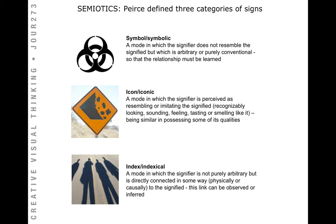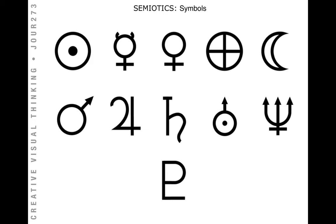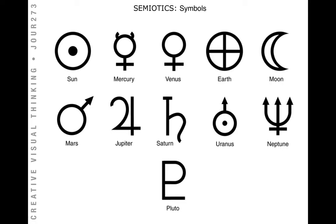An icon is where the signifier resembles or imitates the signified — it will look like what the image represents. An index is where the signifier is not directly laid out but is related or connected physically or causally to the signified, so the link can be observed or inferred. For example, these symbols — unless you have prior knowledge or acculturation — you won't know what they are. They are actually symbols of the planets from NASA, and the interpreter understands the relationship through previous knowledge.